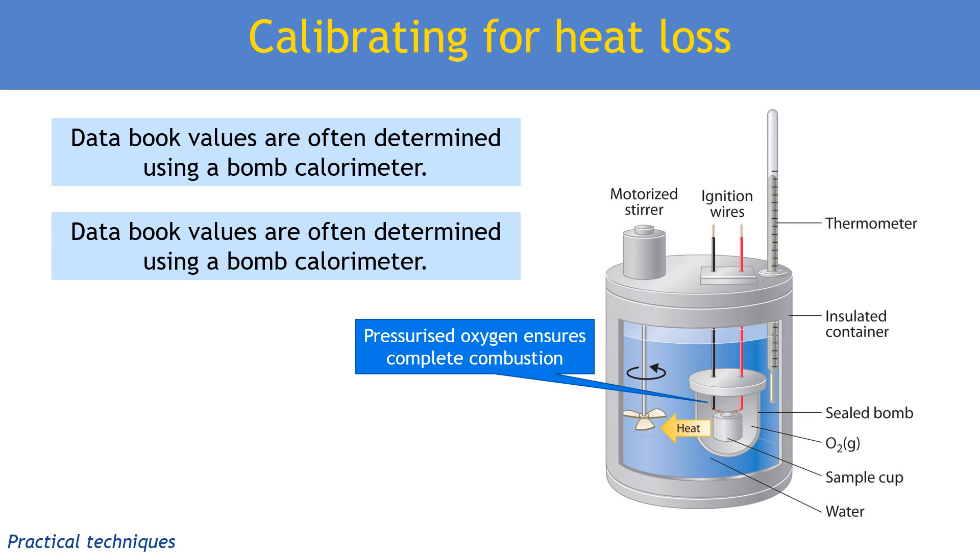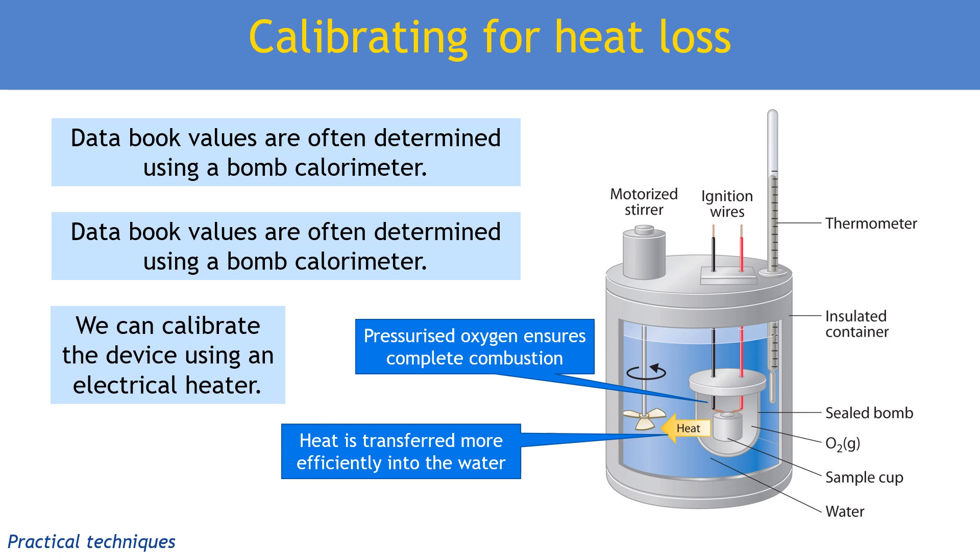Because the fuel is inside the calorimeter, heat is transferred more efficiently into the water. Although there will still be some heat loss, we even calibrate for this by working out the specific heat of the whole apparatus. We would put an electrical heater instead of fuel inside the bomb. We can heat the water using this electrical heater, and we know exactly how many joules of electrical energy have gone in because that's a calculation involving current, voltage, and time. We can then calculate how many joules are actually needed to raise the temperature of the water in this apparatus.